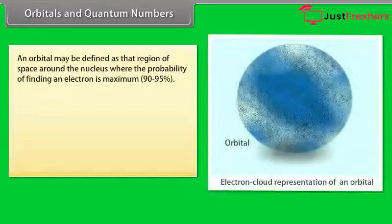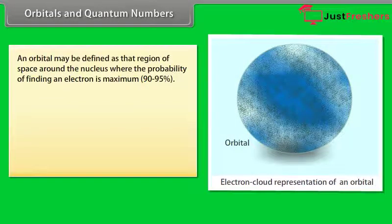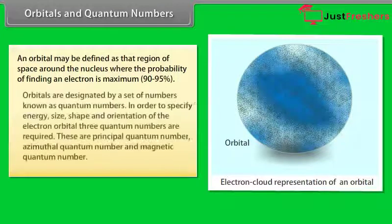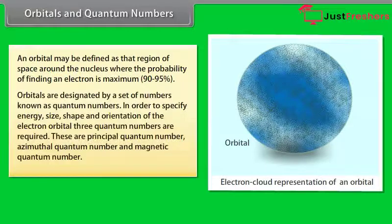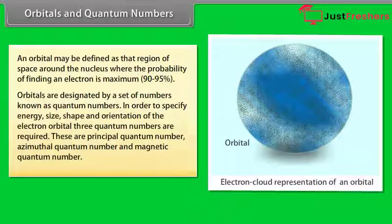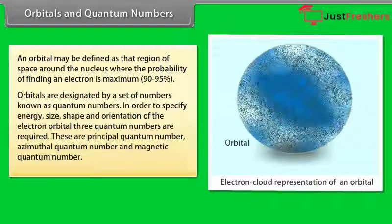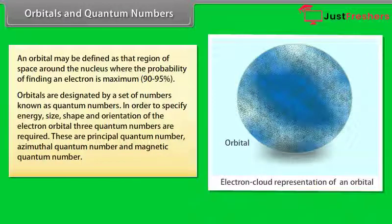Orbitals and Quantum Numbers: An orbital may be defined as that region of space around the nucleus where the probability of finding an electron is maximum. Orbitals are designated by a set of numbers known as quantum numbers. In order to specify the energy, size, shape, and orientation of the electron orbital, three quantum numbers are required: the Principal Quantum Number, the Azimuthal Quantum Number, and the Magnetic Quantum Number.